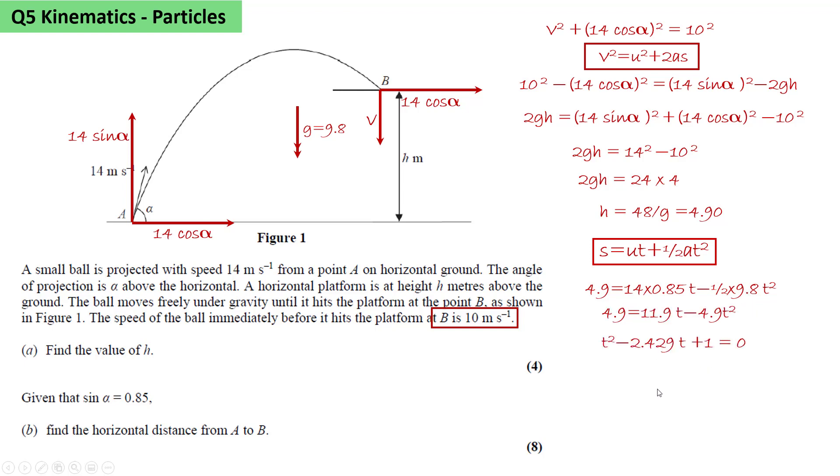We rearrange this and get T squared minus 2.429 T plus 1 equals 0. We use the quadratic formula to solve it and get two values for T.